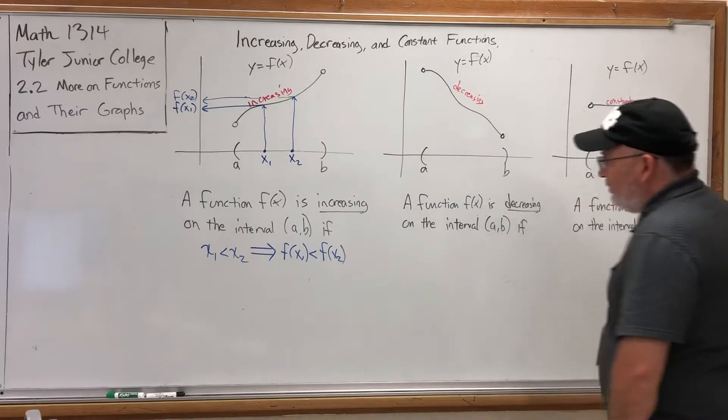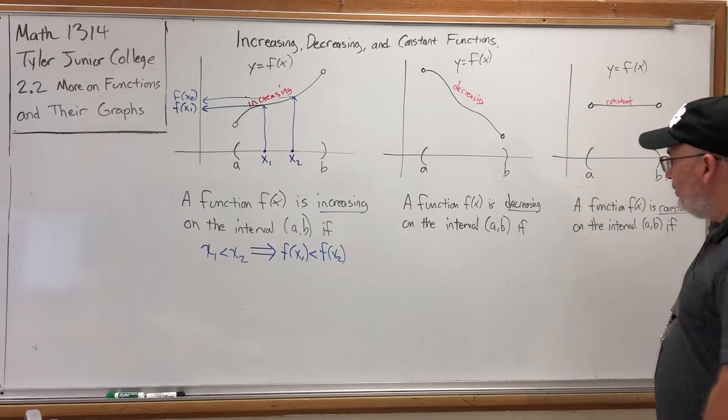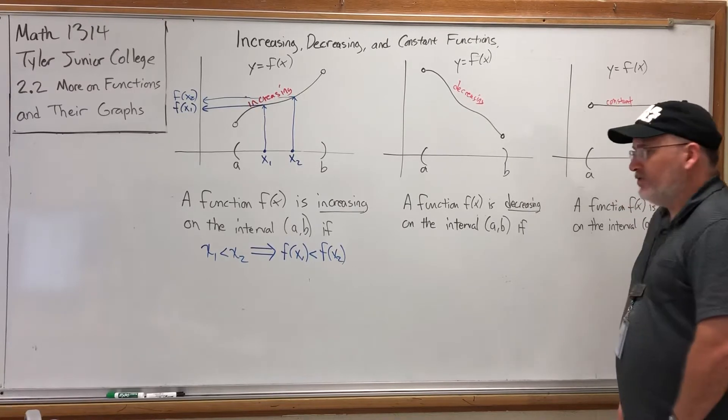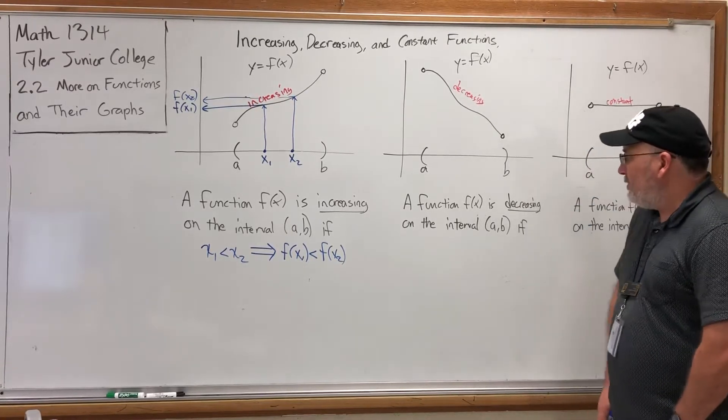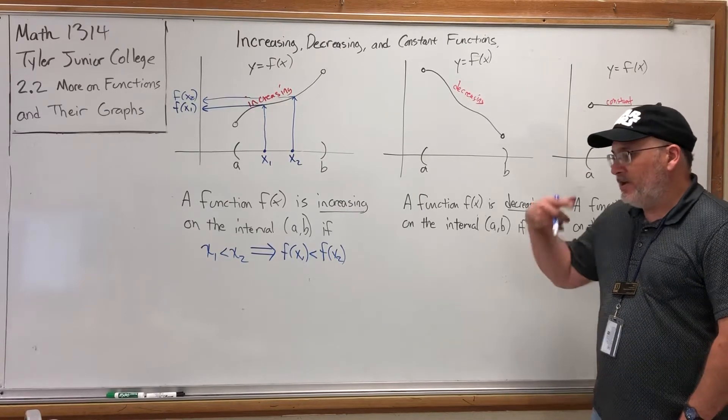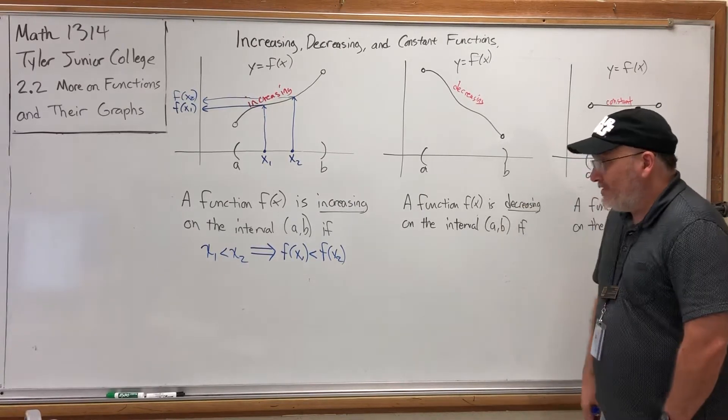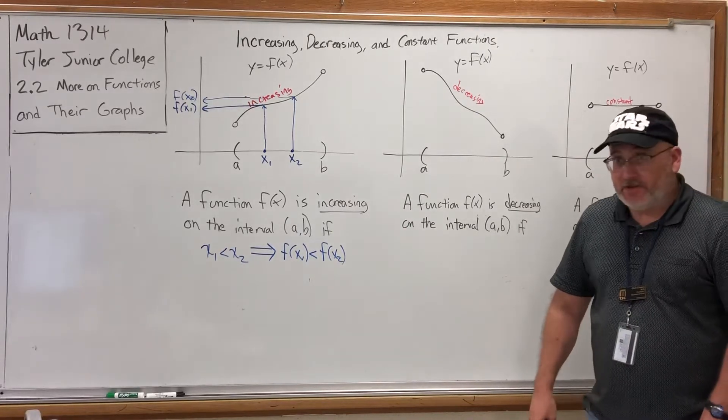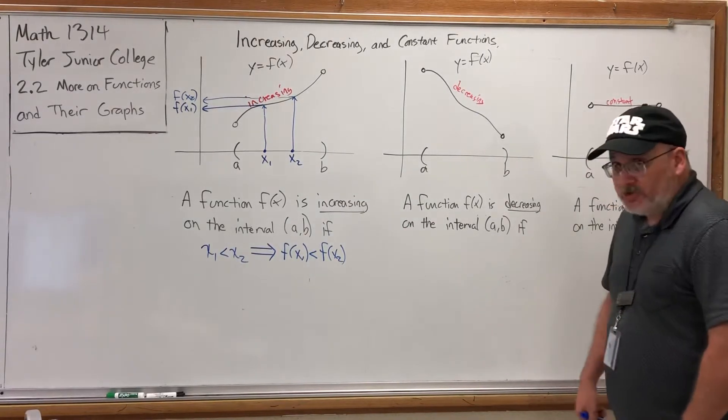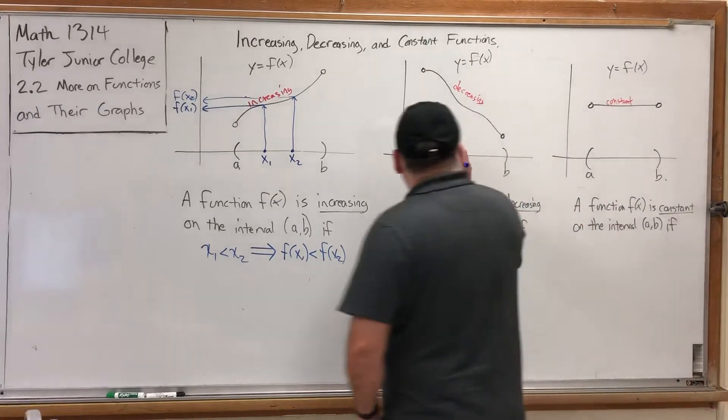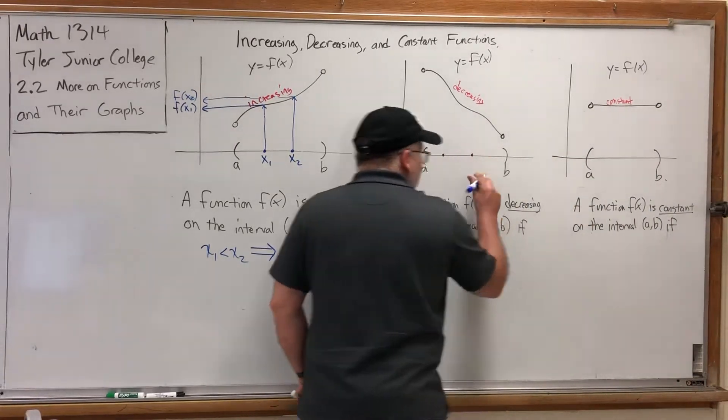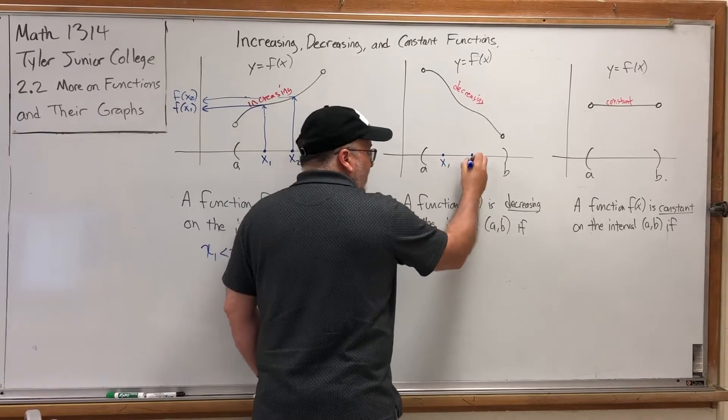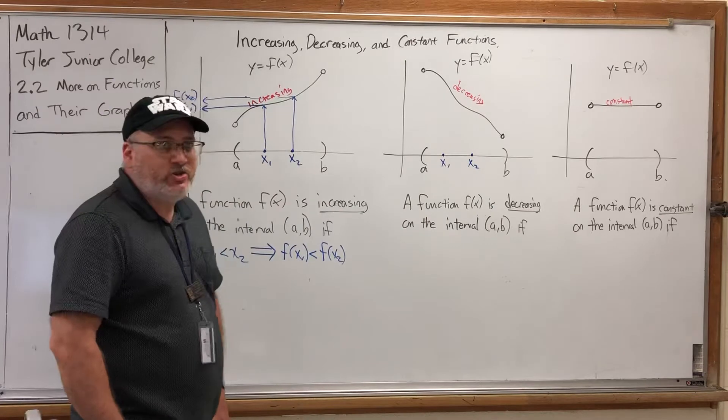Equivalently, smaller inputs produce smaller outputs. That forces the graph to increase. If you get the definition for an increasing function in terms of its inputs and outputs, what do you think the definition of a decreasing function would be? I invite you to pause the video to see if you can replicate the idea and come up with the implication that defines a decreasing function.